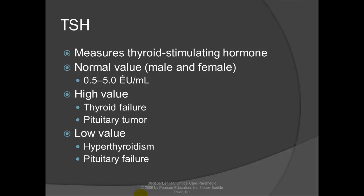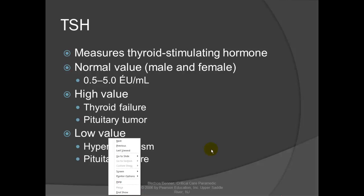TSH, thyroid stimulating hormone, has a normal value of 0.5 to 5. A high value suggests thyroid failure because the thyroid isn't responding to TSH, or a pituitary tumor since TSH comes from the pituitary gland. A low value suggests hyperthyroidism — the thyroid is overactive and burning through TSH — or pituitary failure.